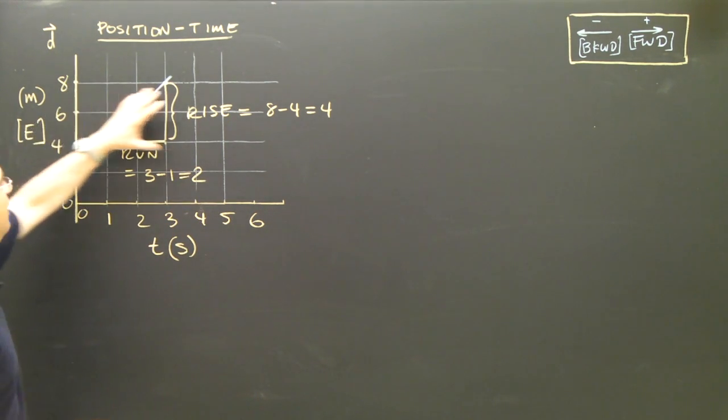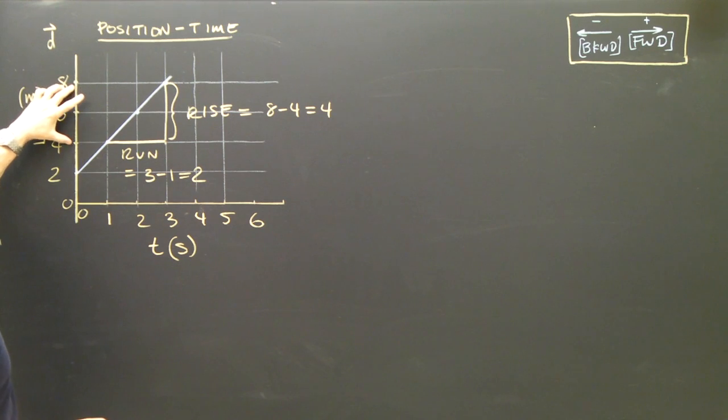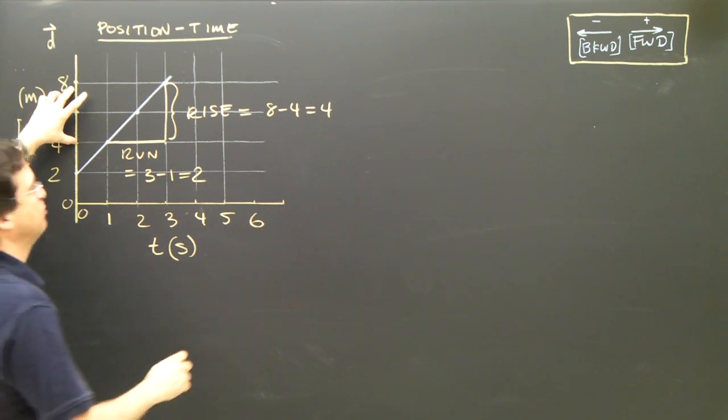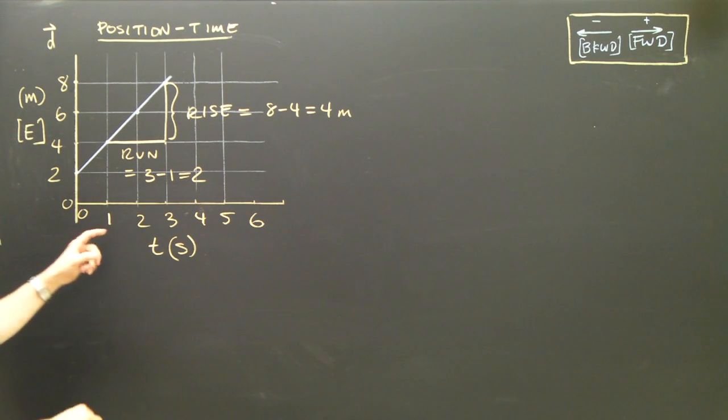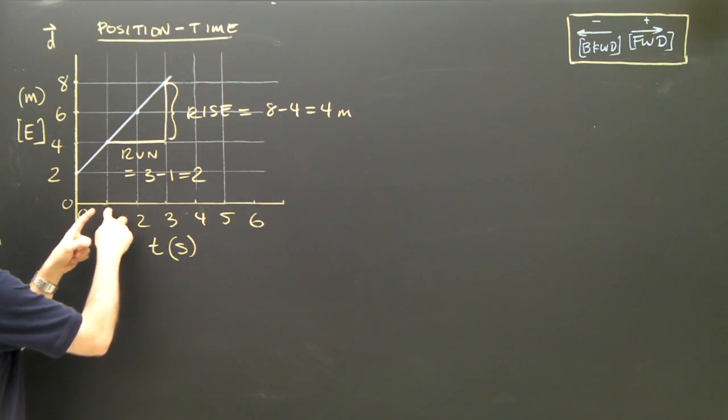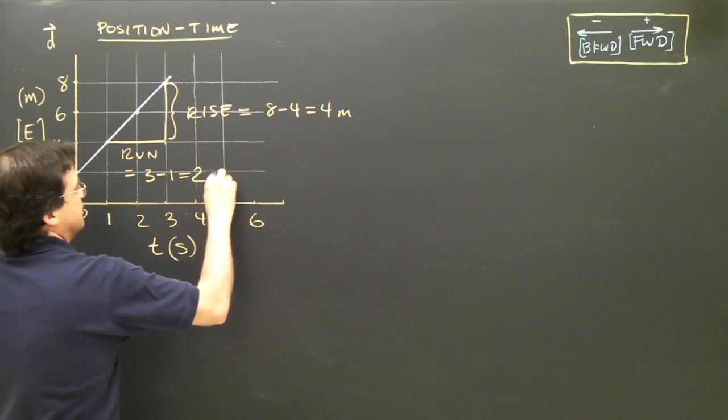And let's look at the units. My rise over here is 8 minus 4, 8 meters minus 4 meters. So, that's going to be 4 meters. This is 3 seconds minus 1 second. So, this is going to be in seconds.